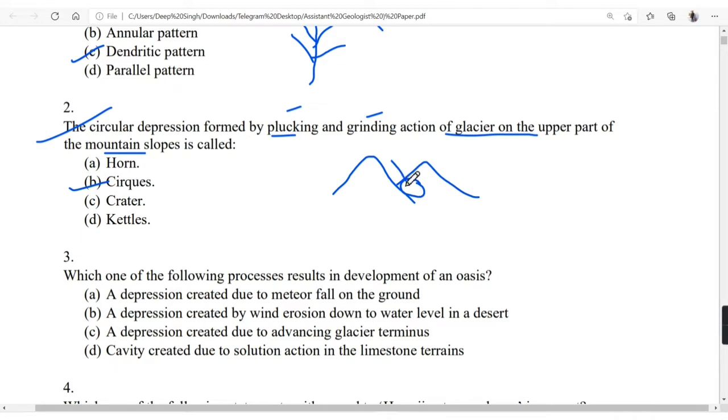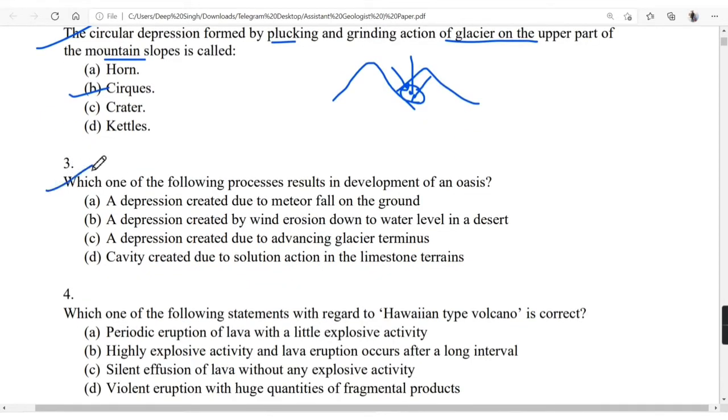Which of the following process results in the development of oasis? It is a depression created by the wind erosion down to water level. Oasis usually occurs in the desert environment, caused by the wind erosion.